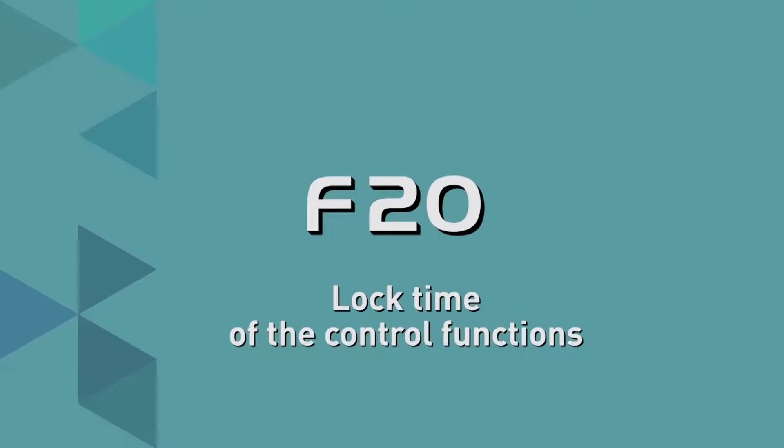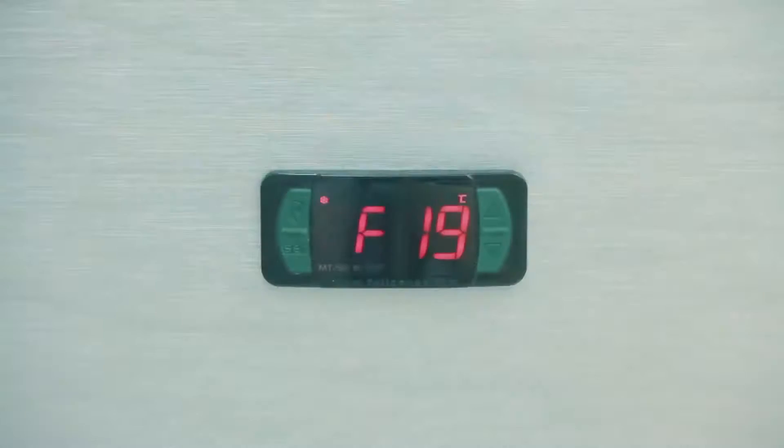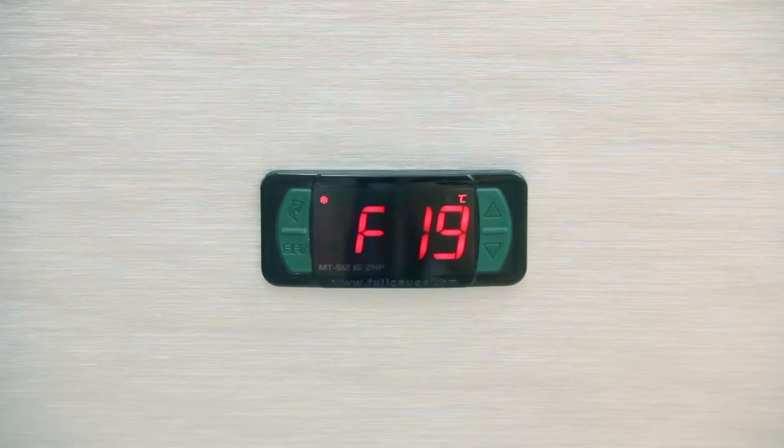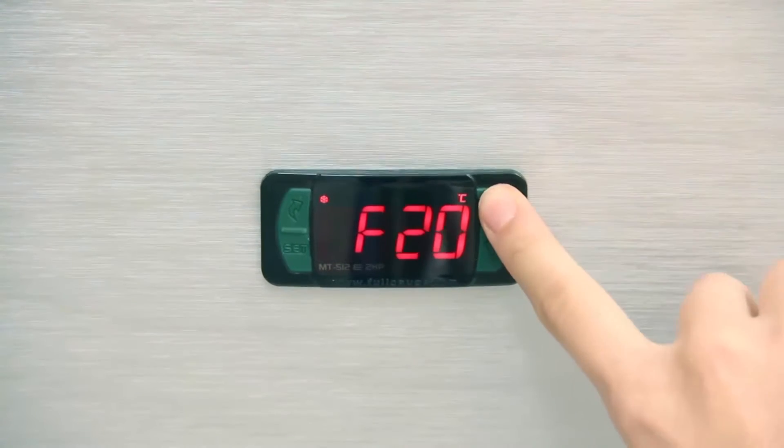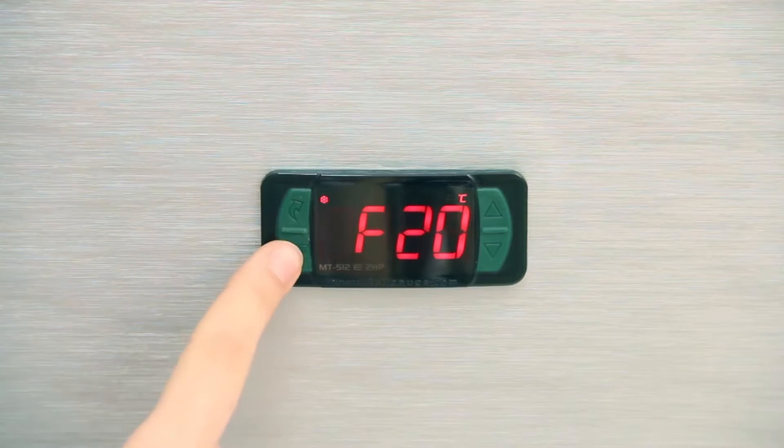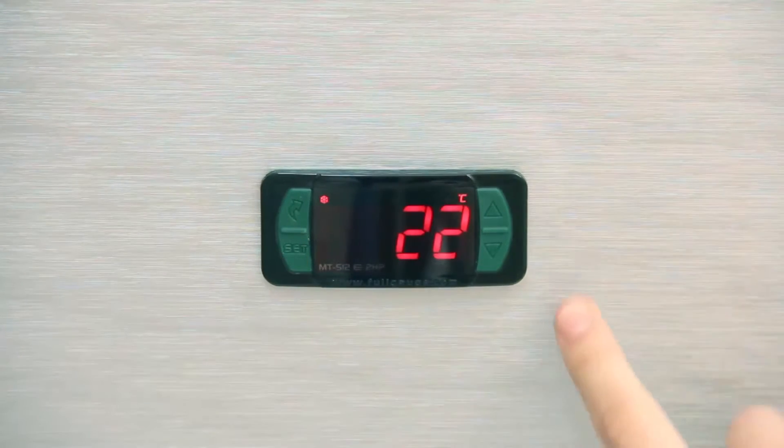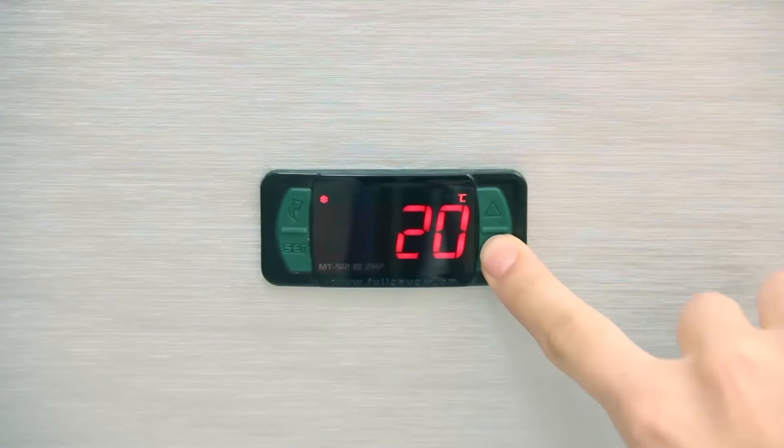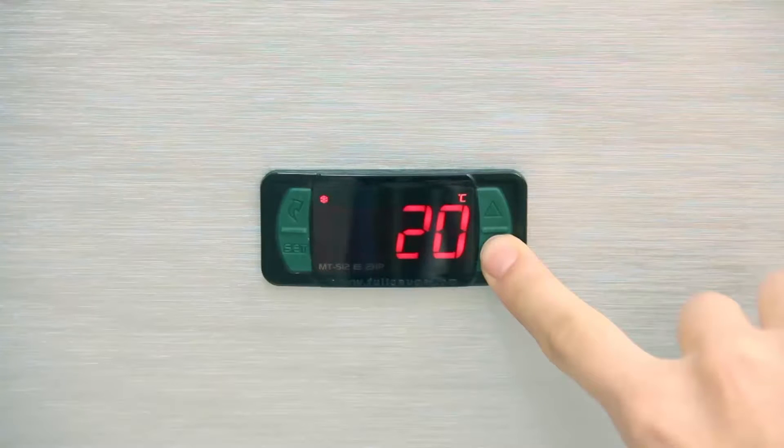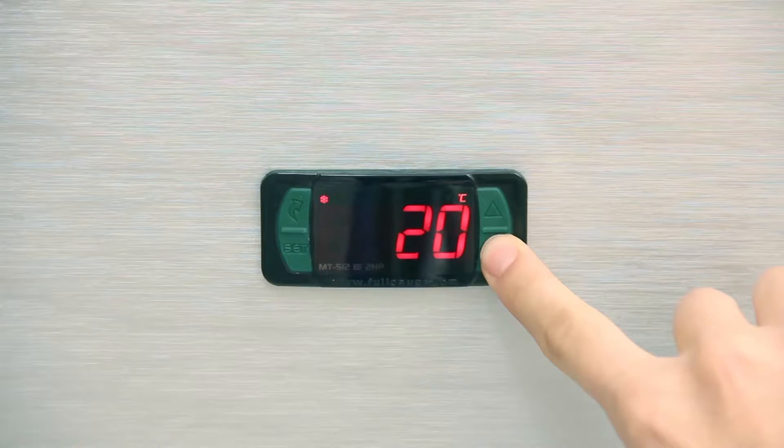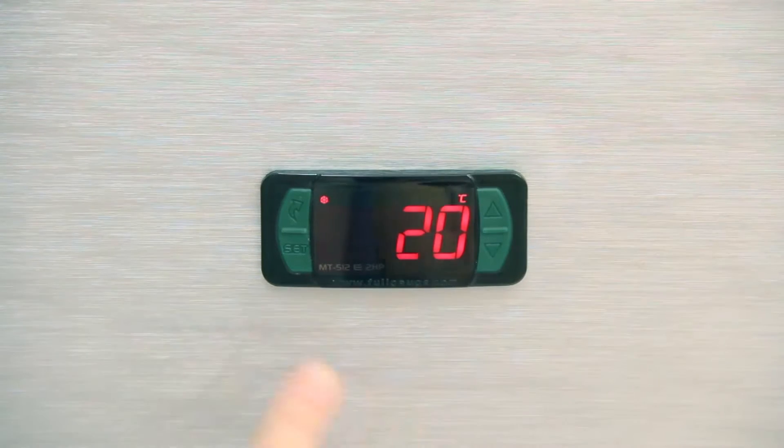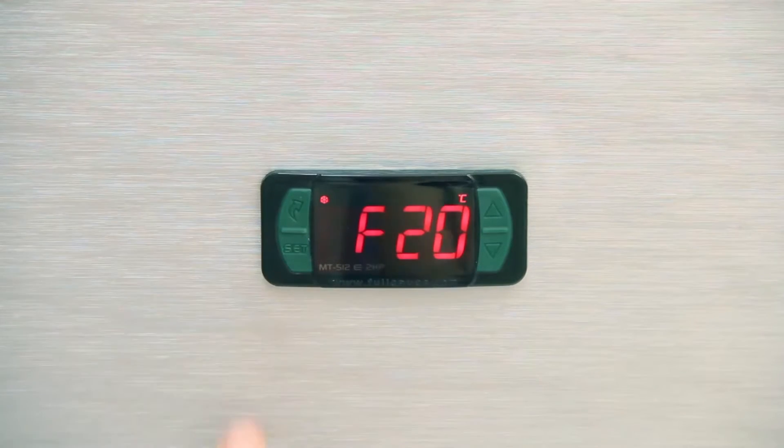F20, Lock Time of the Control Functions. To activate the lock, it is necessary to adjust the F20 parameter with a value greater than 14. For this reason, we adjust the parameter to 20 seconds in the examples. With this activated locking, the set point and other parameters are protected against unauthorized changes. We have seen this function in basic operation.